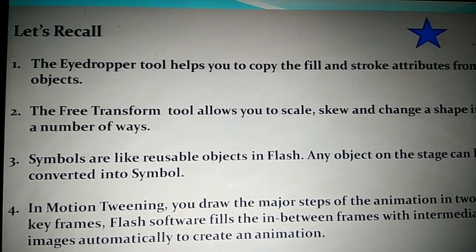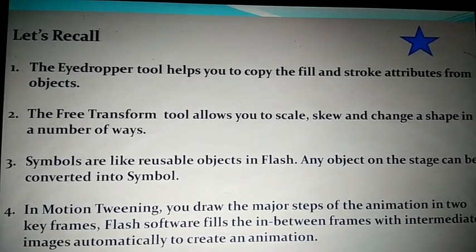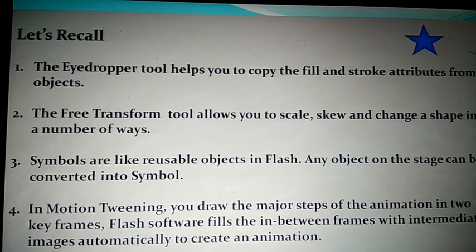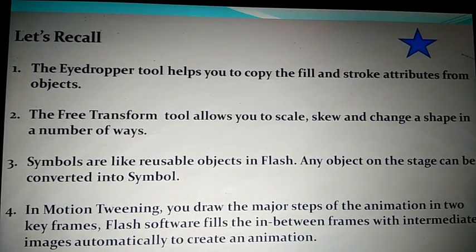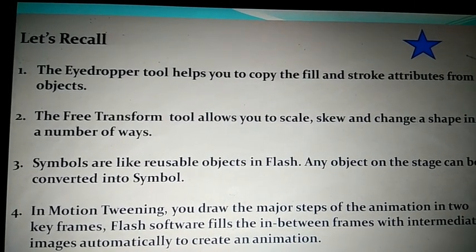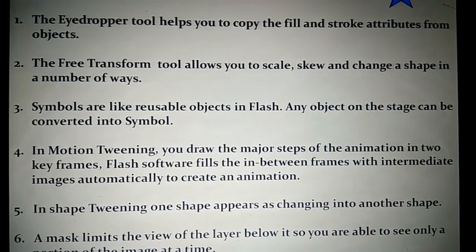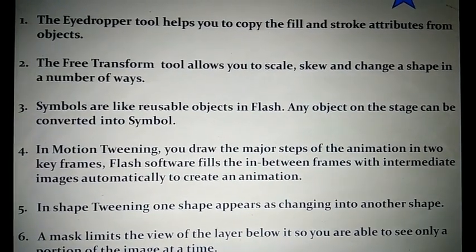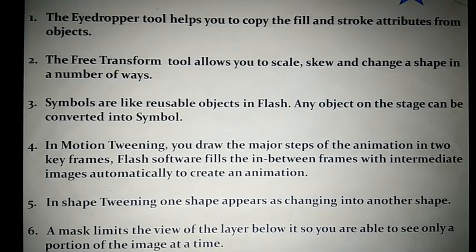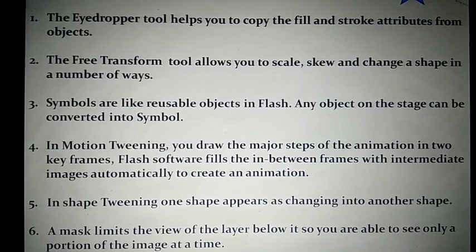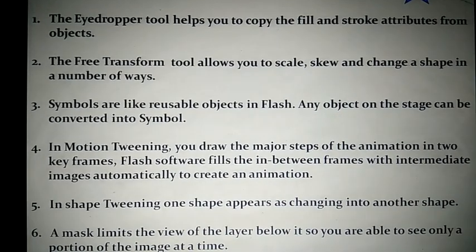Fourth: in motion tweening, you draw the major steps of the animation into key frames, and flash software fills the in-between frames with intermediate images automatically to create an animation. Fifth: in shape tweening, one shape appears as changing into another shape. Sixth: a mask limits the view of the layer below it, so you are able to see only a portion of the image at a time.